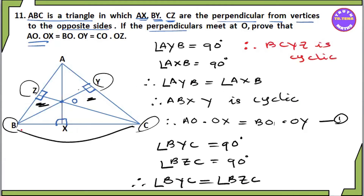Now let's take the cyclic quadrilateral BCYZ. From this cyclic form, we get CO·OZ = BO·OY. So CO·OZ equals BO·OY — these equations are labelled accordingly.